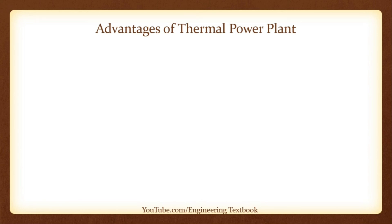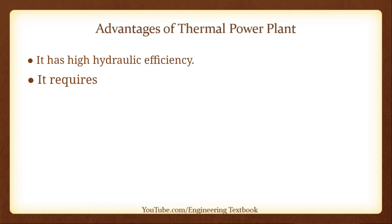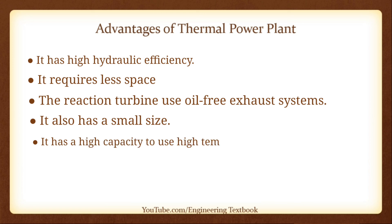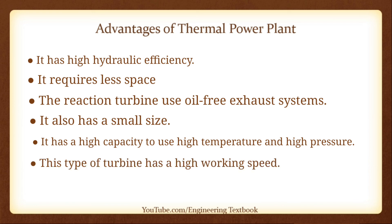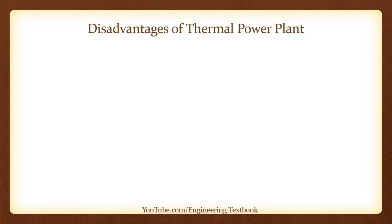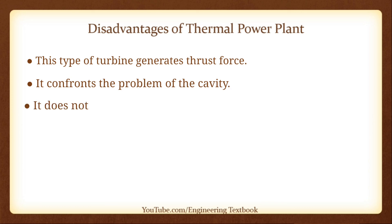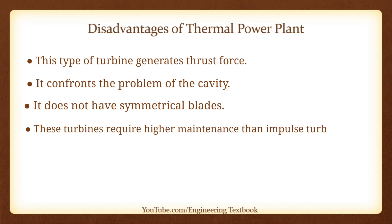Advantages of thermal power plant. It has high hydraulic efficiency and requires less space. The reaction turbine uses an oil-free exhaust system and has a small size. It has a high capacity to use high temperature and high pressure, and this type of turbine has a high working speed. It is easy to construct. However, this type of turbine generates thrust force, confronts the problem of cavitation, does not have symmetrical blades, and requires higher maintenance than an impulse turbine.